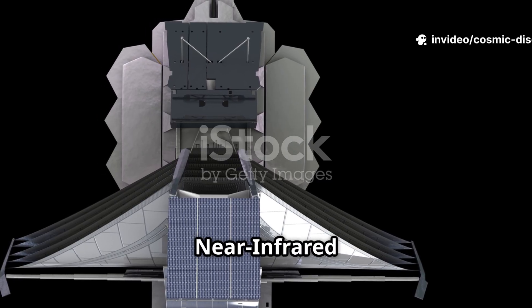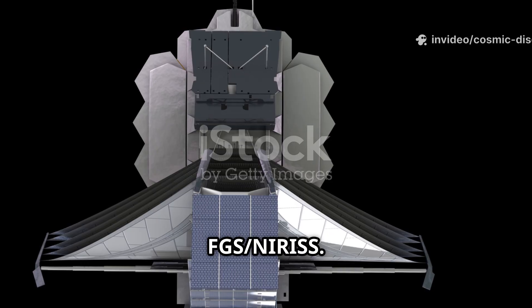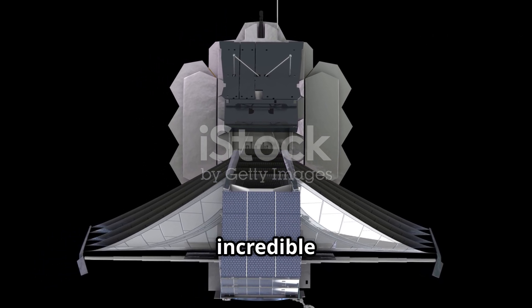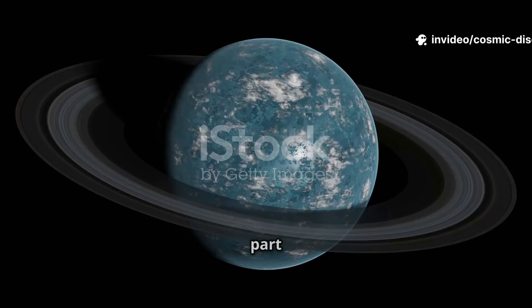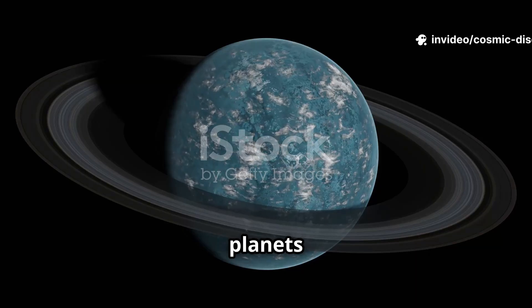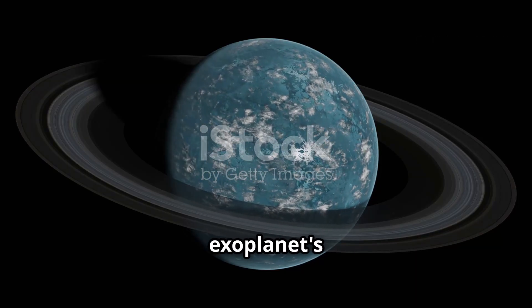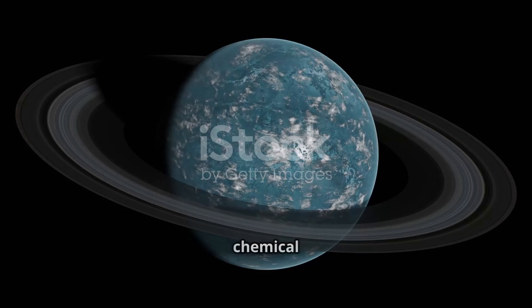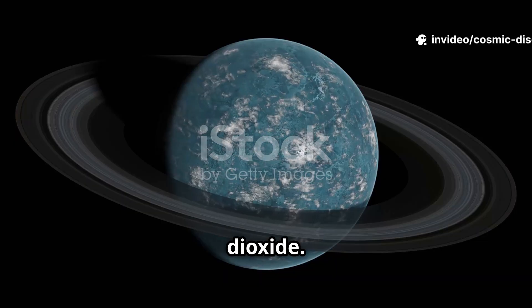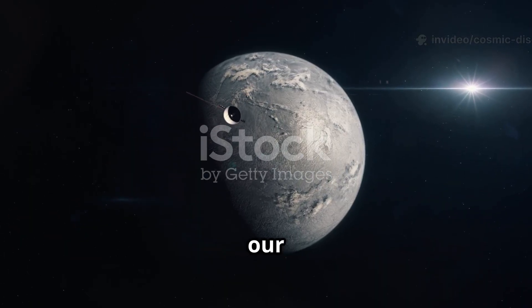Finally, there is the fine-guidance sensor and near-infrared imager and slitless spectrograph, or FGS NIRIS. The fine-guidance sensor is what allows the telescope to point with such incredible stability. The nearest part of the instrument is particularly adept at studying the atmospheres of exoplanets, planets orbiting other stars. By observing the starlight that passes through an exoplanet's atmosphere, it can detect the chemical signatures of gases like water vapor, methane, and carbon dioxide.